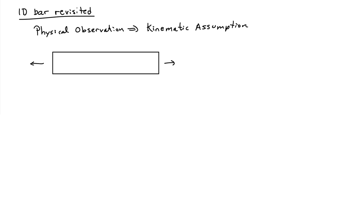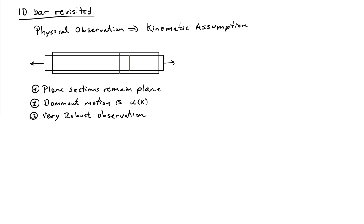Consider a bar that we pull on. I'll draw a green line on the side to label some material particles so I can observe what they do kinematically. When I pull on the bar, it extends, and this vertical line of material remains planar after deformation. This is known as the assumption of plane sections remain plane, a really common observation in physical systems deformed with axial loads.